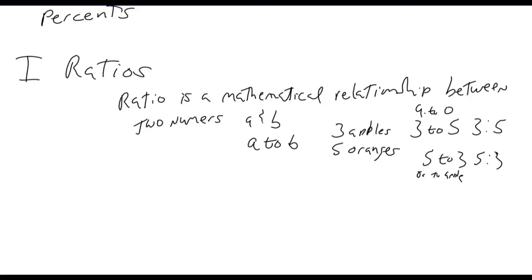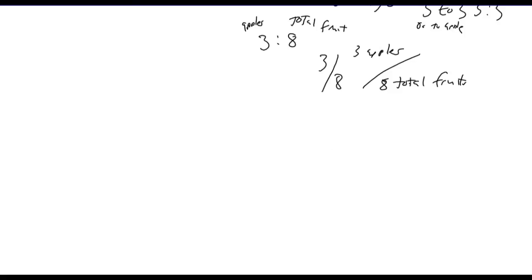Additionally, the ratio of apples, say, to the total amount would have a ratio of three to eight. Where this is apples to total fruit. It would be a three to eight ratio or three of eight. So, three apples out of a total. Three apples of eight total fruit.